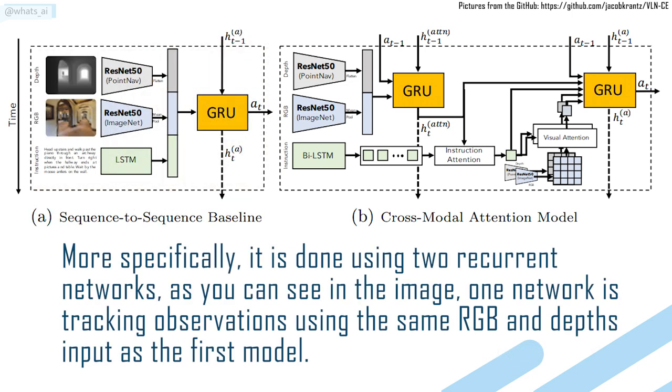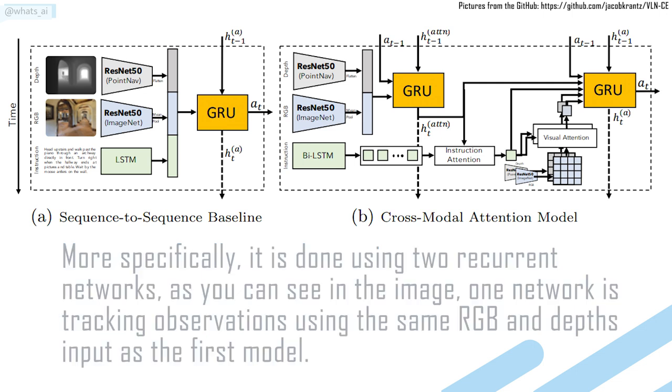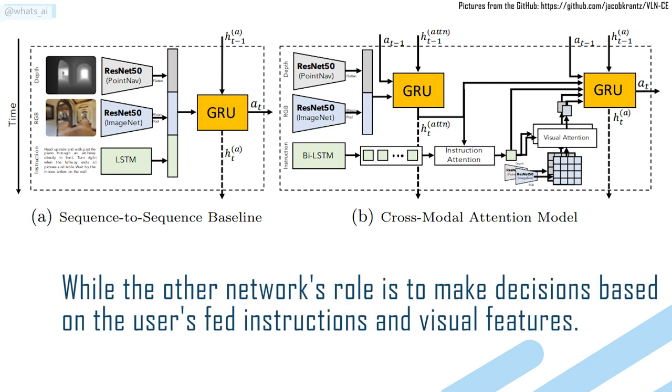As you can see in this image, one network is tracking observations using the same RGB and depth input as the first model, while the other network's role is to make decisions based on the user's fed instructions and visual features.